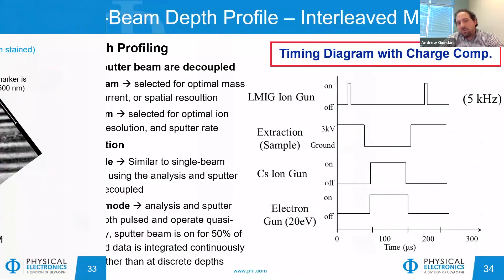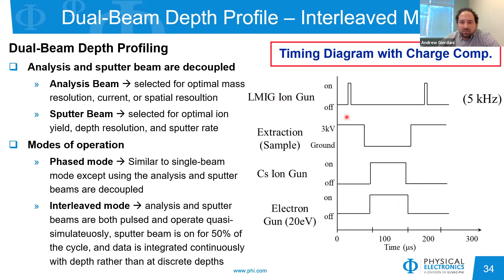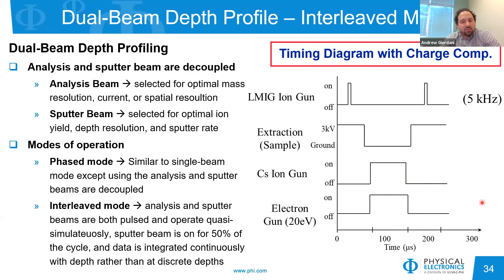Interleave mode is another type of dual beam depth profiling where both the sputter and analysis beams are pulsed, operating quasi-simultaneously. The sputter beam is on for 50% of the cycle. Charge compensation is still possible in interleave mode: using the timing diagram, the LMIG fires at 5 kHz, the sample is at high voltage for extraction, then during the flight time the sputter gun and electron gun are turned on for sputtering and charge compensation, then turned off before the next LMIG pulse. So insulating materials can be analyzed in interleave mode with high data point density.